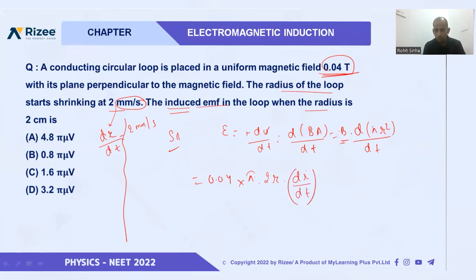Put all the values. You know, all values are given. Put here 0.04 × π - leave it here because in the answer it is given in terms of π only. Times 2, times the value of r. The radius is 2 centimeters, that's 2 × 10^-2 meters, and dr/dt is 2 millimeters per second, that's 2 × 10^-3 meters per second.